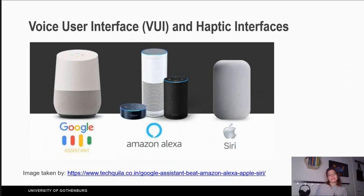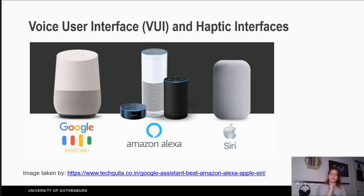Voice interfaces and haptic interfaces. Voice interfaces, as discussed in previous chapters, is when we talk to a computer — like 'Hey Google, what is the weather today?' Haptic interfaces are when the device we are touching gives us tactile feedback. For example, if you go to the Google Assistant and try to adjust the volume from the top of the assistant, you will feel a small vibration that indicates you are going through the different volume levels.